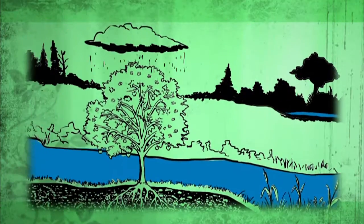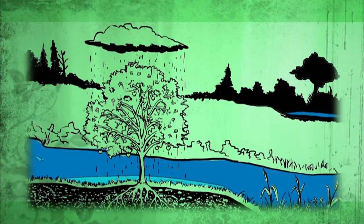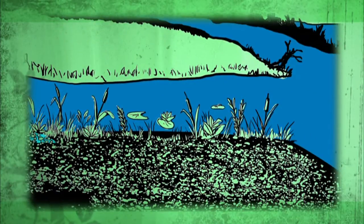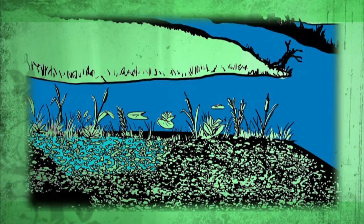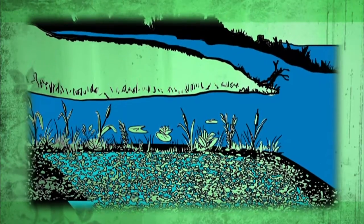Wetlands also provide flood control. With the ability to hold millions of gallons of water, wetlands act as buffers between surface runoff and rivers, which can reduce flooding peaks by as much as 60%. That helps protect property and save lives.